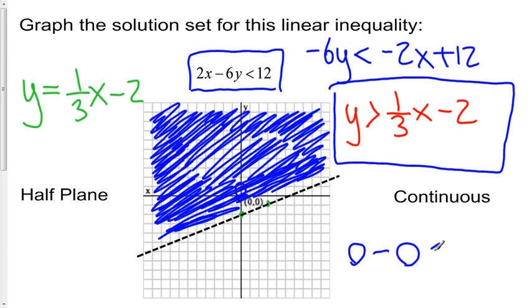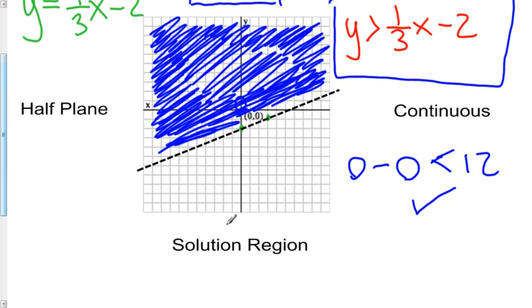Is that going to be less than 12? Well 0 is indeed less than 12. So we know that we have colored the proper side of the boundary line and that our solution set is on this side right here.